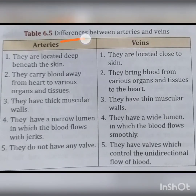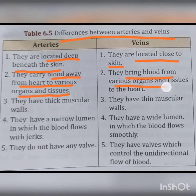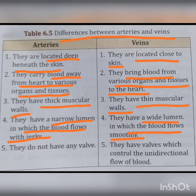What are the differences between arteries and veins? Arteries are located deep beneath the skin, while veins are located close to the skin. Arteries carry blood away from the heart; veins bring blood from organs and tissues to the heart. Arteries have thick muscular walls and a narrow lumen in which blood flows with jerks. Veins have thin muscular walls and a wide lumen in which blood flows smoothly. Arteries do not have any valves, while veins have valves which control the unidirectional flow of blood.